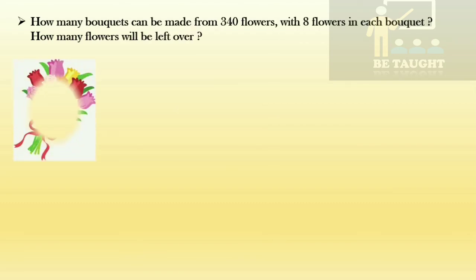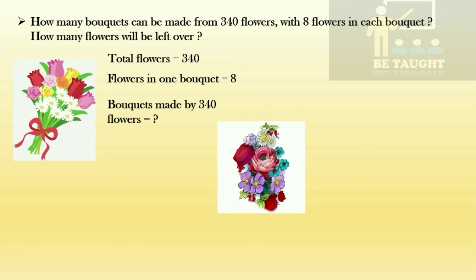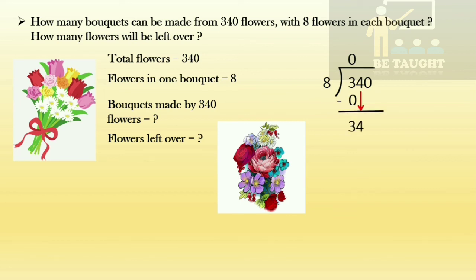Next word problem: How many bouquets can be made from 340 flowers with 8 flowers in each bouquet, and how many flowers will be left over? Statements: total flowers = 340, flowers in one bouquet = 8. We divide 340 by 8. Three is smaller than 8, so eight zeros are 0, three minus zero is 3. Bring the four down; 34 in the eight times table — eight fours are 32. Four minus two is 2 and three minus three is 0.